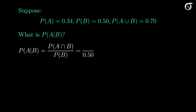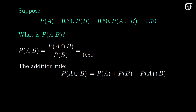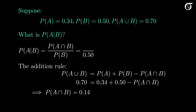We have to find the probability of the intersection another way. If we were given only the probability of A and the probability of B, this question would not be answerable. But here we are also given the probability of the union, so let's make use of that. Recall the addition rule: the probability of the union equals the sum of the individual probabilities minus the probability of the intersection. So 0.7 equals 0.34 plus 0.5 minus the probability of A intersect B, which gives us 0.14. The probability of A given B is therefore 0.14 over 0.5, or 0.28. The knowledge that B has occurred has lowered the probability of A from 0.34 to 0.28.